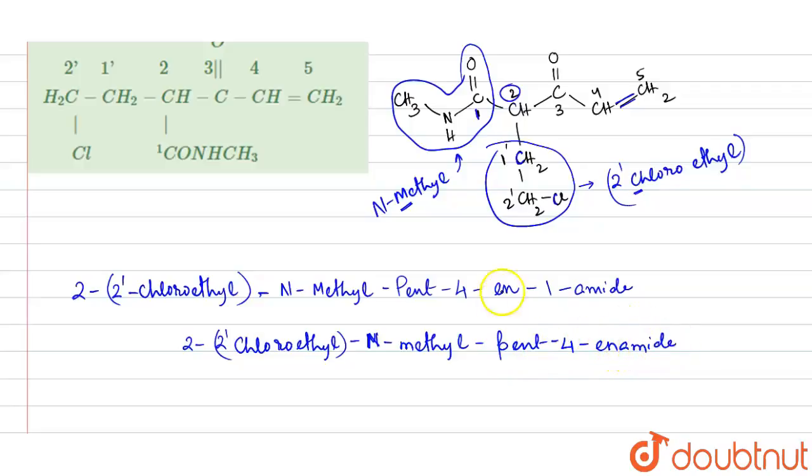We can simply ignore this one and we can write it like enamide. So this is the final IUPAC name of the compound that is given in the structure. This is the required solution. Thank you.